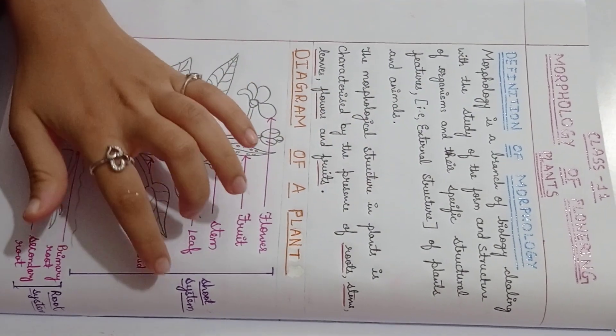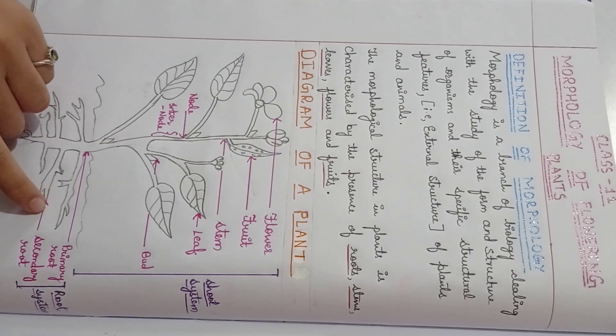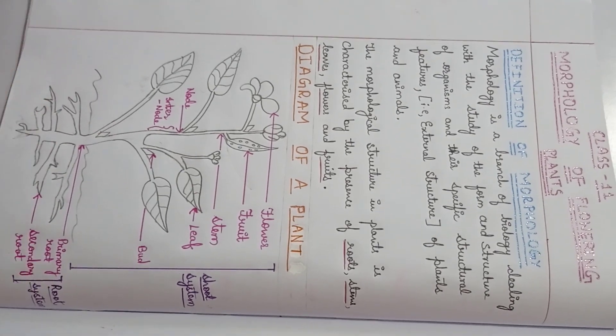These parts are known as a shoot system. Next, the root consists of two types, that is, a primary root and secondary root. These two together are called a root system.